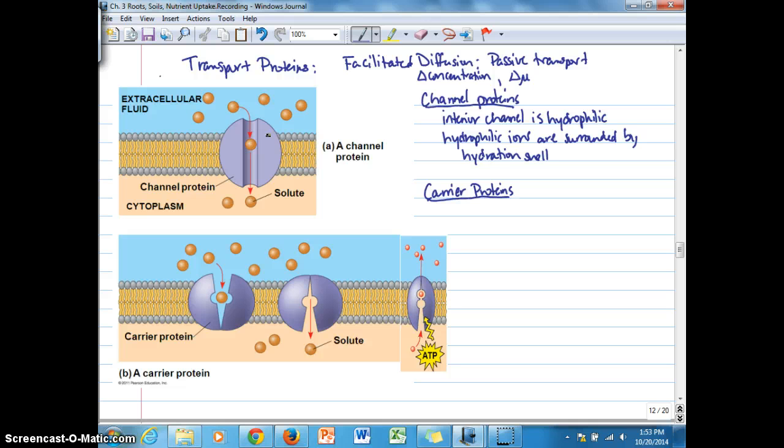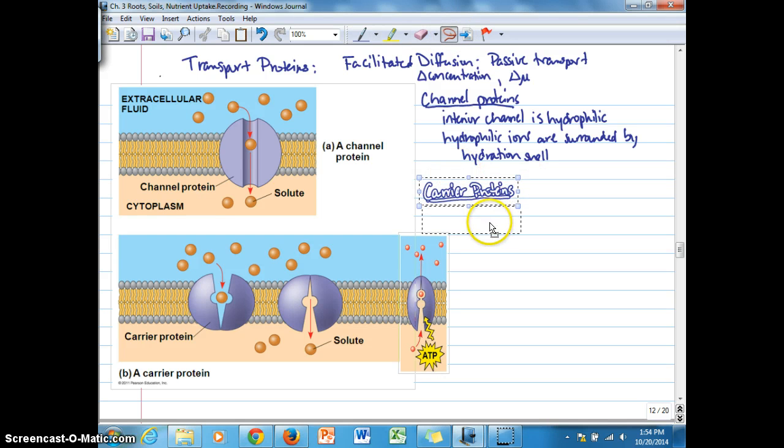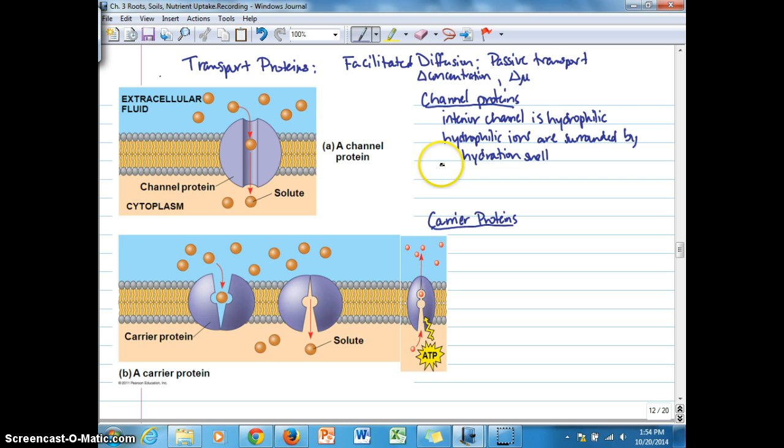Channel proteins are a lot more efficient in transporting ions across. We have something on the order of 100 million ions that can be transported per second across a cell membrane, which means that there are fewer, and this is in comparison to carrier proteins, which transport something on the order of 10,000 to 100,000 ions per second.